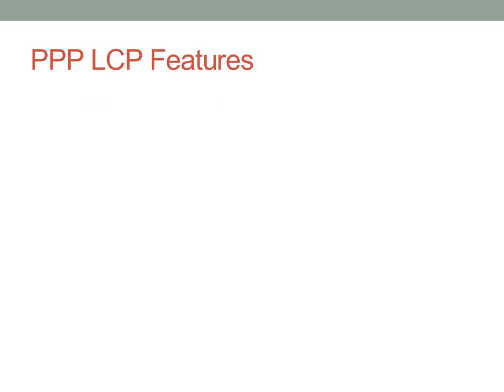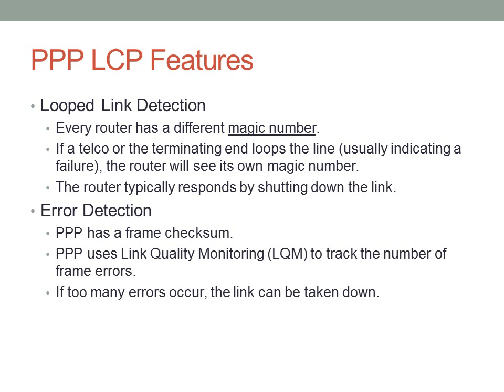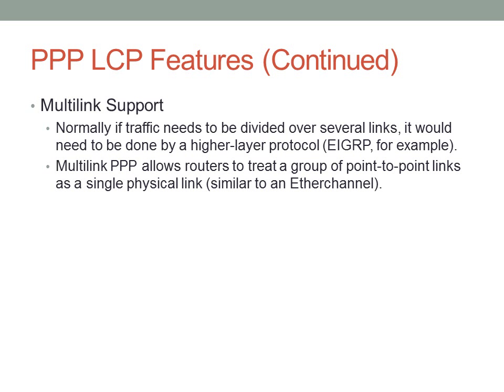Link Control Protocol within PPP has quite a few features you need to know about for the CCNA. It does looped link detection — it can detect if a telco terminates in a loop. The router will shut down the link if it recognizes its own magic number on the line. It also does error detection: PPP has a frame checksum and uses link quality monitoring to track errors. If there are too many frame errors, the link is taken down. Multi-link PPP is another feature — it allows routers to treat a group of point-to-point links as a single physical link, so multiple leased lines can be treated as one.